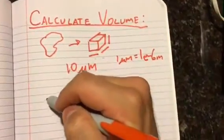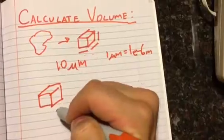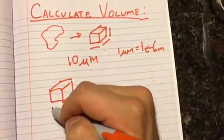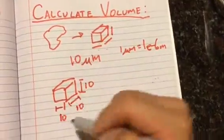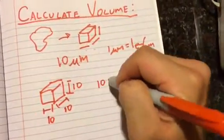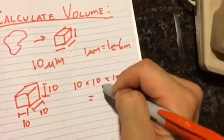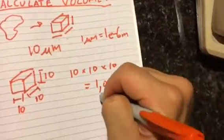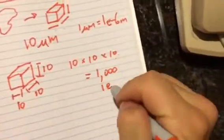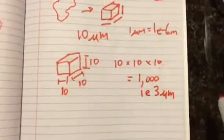So there's a couple ways that you can calculate this. One way is to take your cubic shape and you could just call each side ten microns long, so this is ten, this is ten, this is ten. So ten times ten times ten, and this adds up so ten times ten is a hundred and one hundred times ten is one thousand, or you could write this as 1e3 microns.